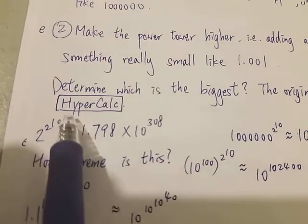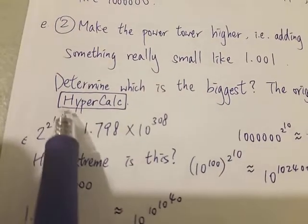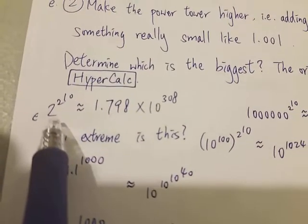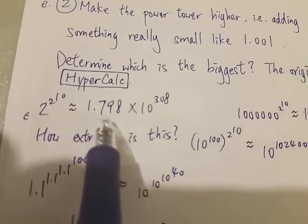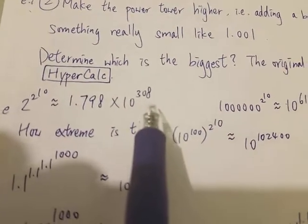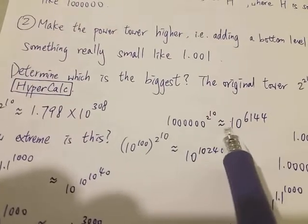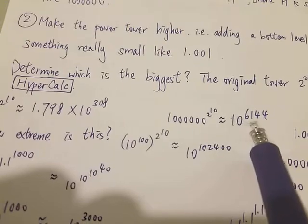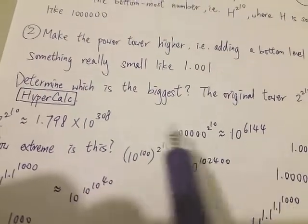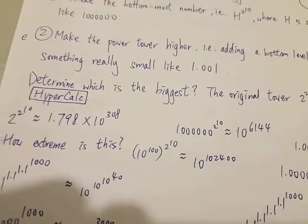Using a very powerful online calculator called HyperCal, we can calculate that 2 to the 2 to the 10 is around 10 to the power of 308. And for the million version, it's around 10 to the 6,144. So we can see this number is much bigger than the original — and actually we don't even need a calculator for that. This result is expected.